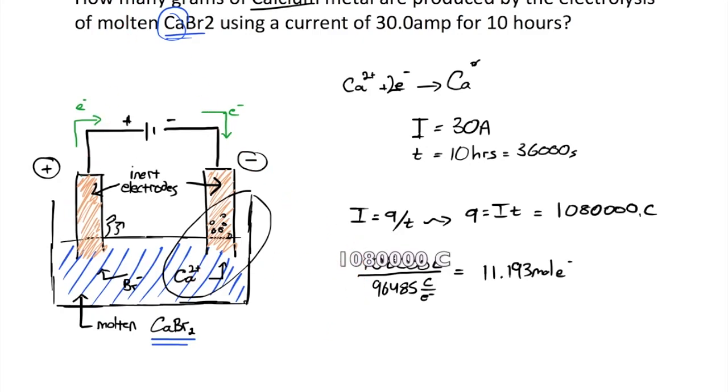This is helpful because of this equation which describes how for every two moles of electrons transferred you get out one mole of calcium atoms.